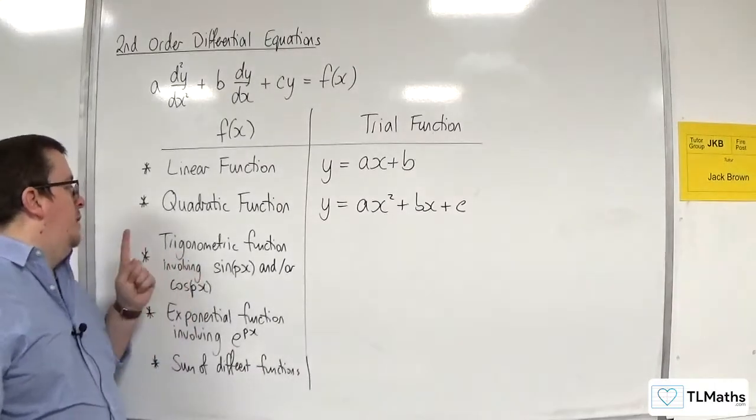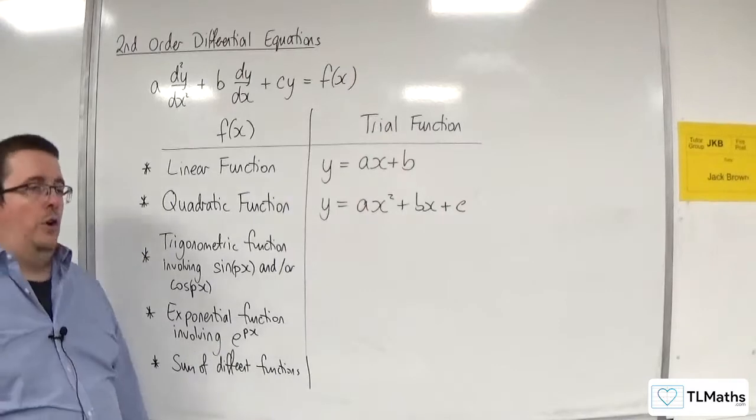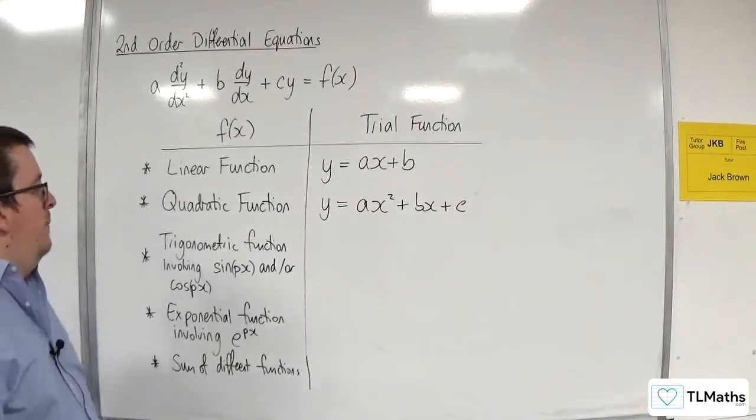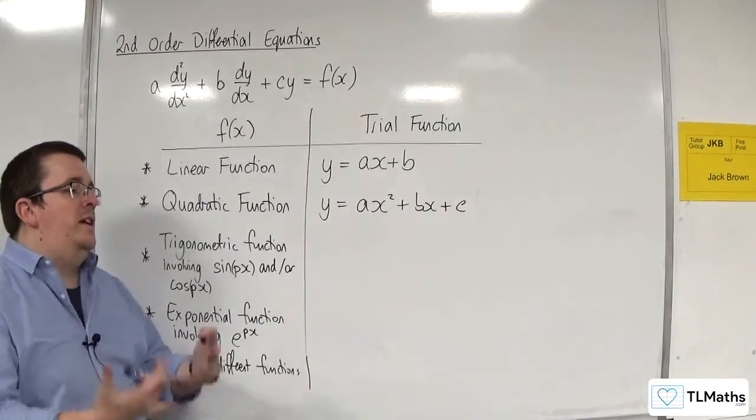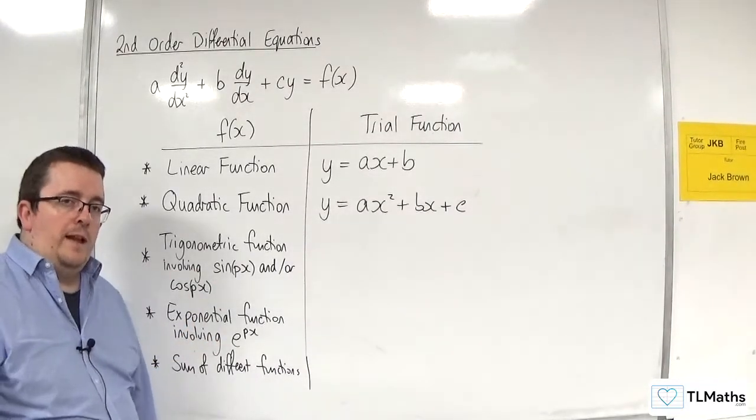If the right-hand side is a trigonometric function involving sine of px and or cos of px, so it might just be like 3 sine of 2x or 8 cosine of 9x.